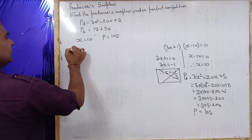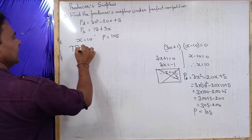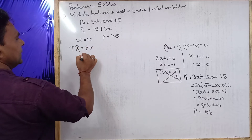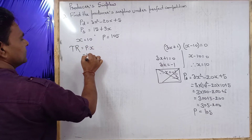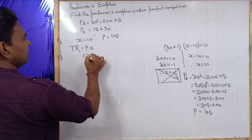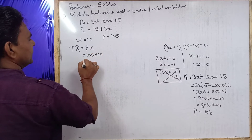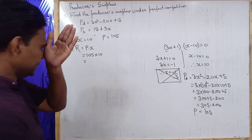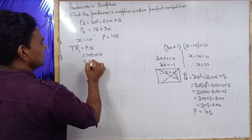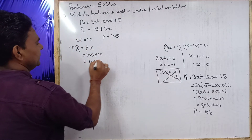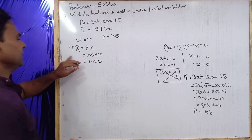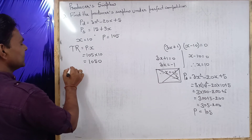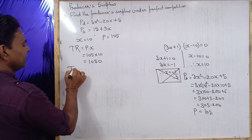We have x equal to 10 and price equal to 105. First, find total revenue: TR equals price into quantity, which is 105 into 10, giving total revenue equal to 1050.